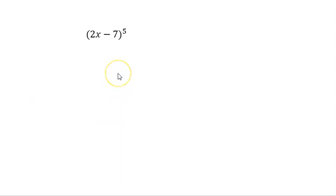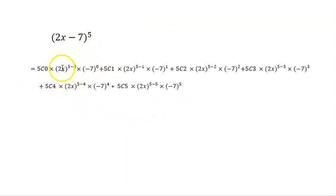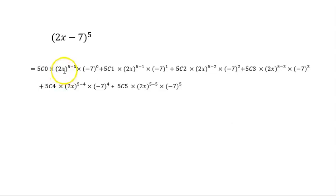Now let's move to an actual problem. We have (2x − 7) all to the power of 5 — a fairly large binomial expansion. No matter how complicated it looks inside the bracket, the method never changes. We apply the general term formula to each term. For term 1: 5C0 times (2x)^(5−0) times (−7)^0.